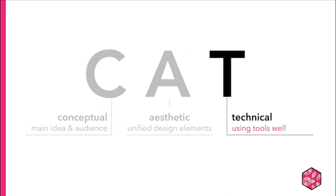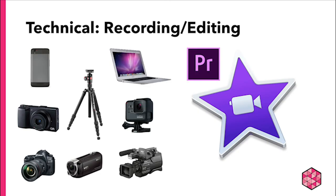Now that we've covered aesthetic choices, let's touch on the last consideration of the CAT of effective design: the technical. Depending on what you are familiar with and what your instructor requires, plan your technical arsenal at the very beginning of your process. Will you use your iPhone or Android phone, or a friend's DSLR camera? Do you have a tripod or can you set the camera on a stable surface? Which editing software will you use? Adobe Premiere Pro and Apple iMovie are among the most common editing programs used by students. Do not overthink what equipment to use — go for the simplest solutions and what you are most comfortable with.